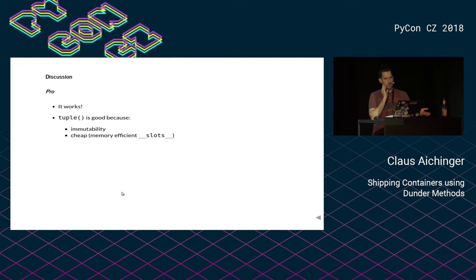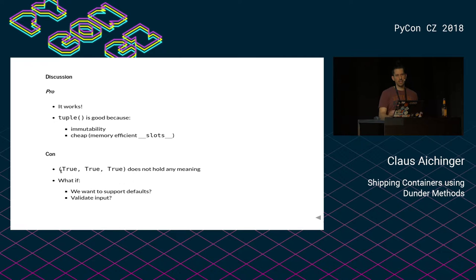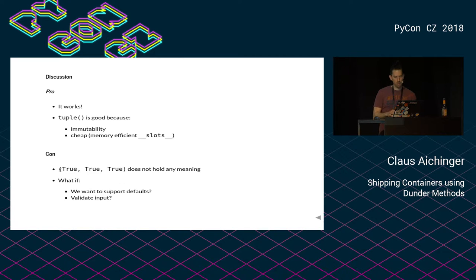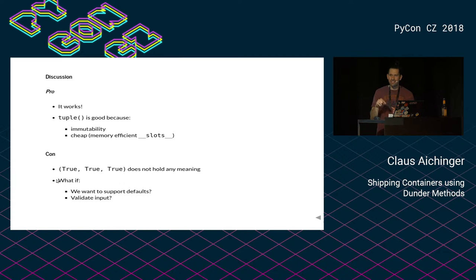If you want to model the response to these questions, the obvious choice is to use a tuple and store the results — I like PyCon CZ, I will go to the party, and please send me more emails. Using a tuple is a good choice because it's immutable and it's cheap. It doesn't require as much memory compared to using your own object to hold it. But on the other hand, 'true, true, true' doesn't hold any meaning — if you get this result you have no clue what it is about.